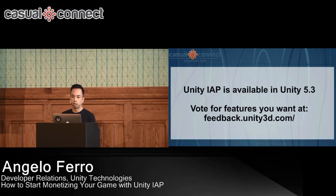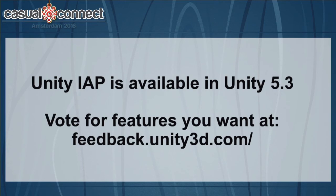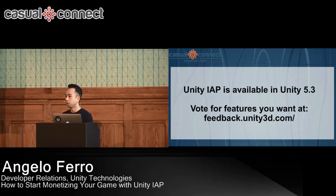IAP is available now, completely free to use, and available in 5.3. We'll have more features in 5.4 such as the IAP cloud catalog. Tell us what you want, and we'll build it. Seriously — there's feedback.unity3d.com where you can vote for specific features. Our product managers use this on a weekly basis to determine what goes into our next sprint. It's really important that as a community you tell us what you want, because we're here to build something cool that provides value to you.